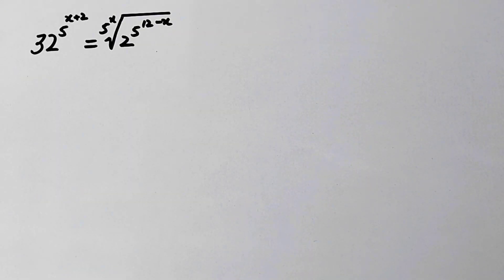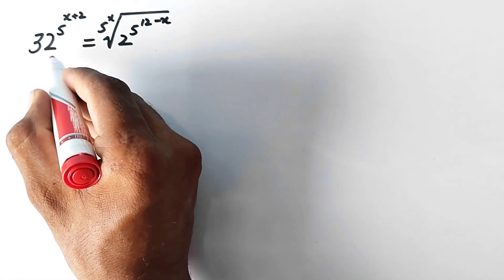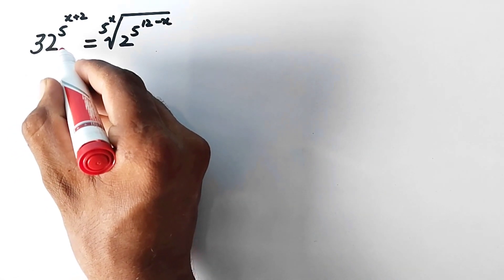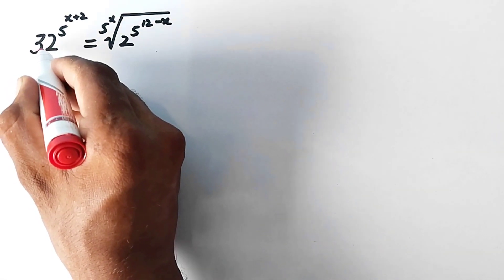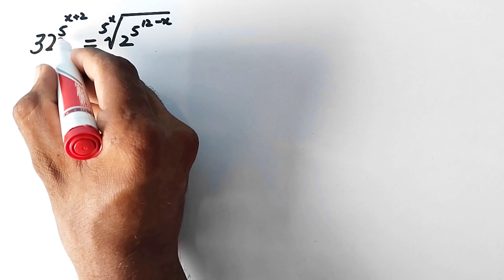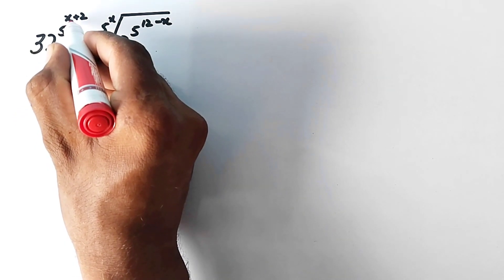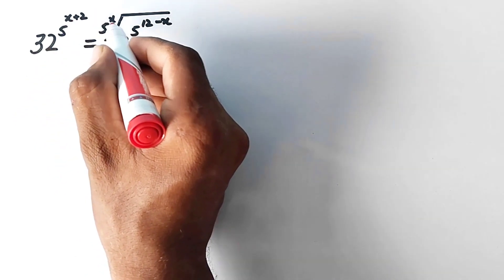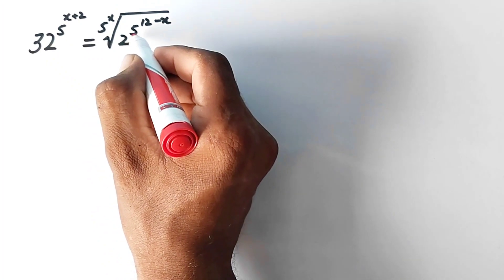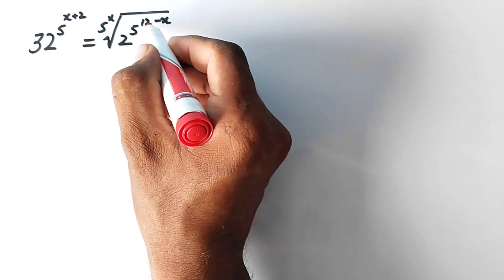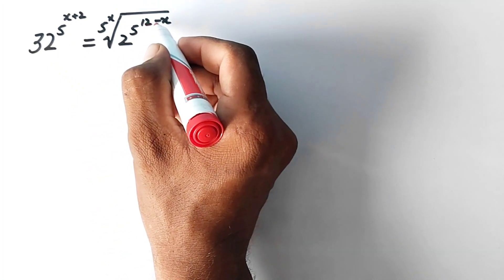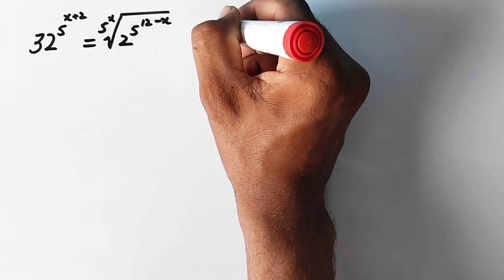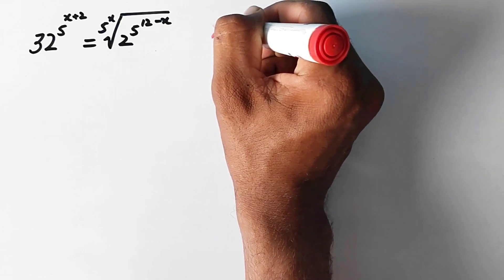Hello everyone, welcome to ExplodeMaths. Today we are going to solve a nice math problem: 32 raised to the power 5 raised to the power x plus 2 is equal to 5 raised to the power x, root of 2 raised to the power 5 raised to the power 12 minus x, and we have to find the value of x.